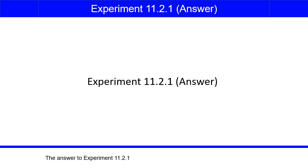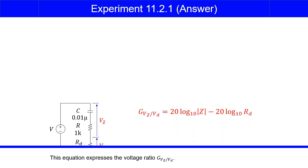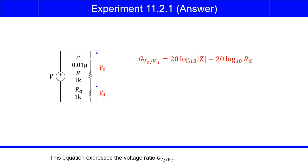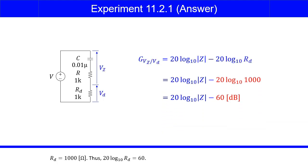The answer to experiment 11.2.1. This equation expresses the voltage ratio GVZ over VD. RD was equal to 1000 ohms, thus, 20 times log base 10 of RD was equal to 60.